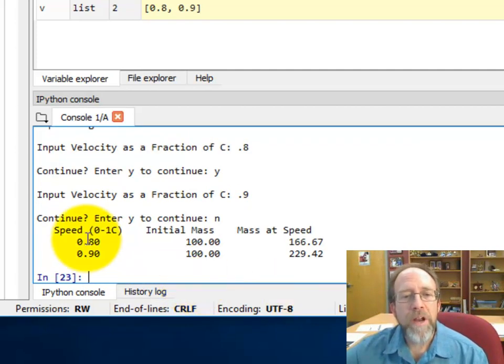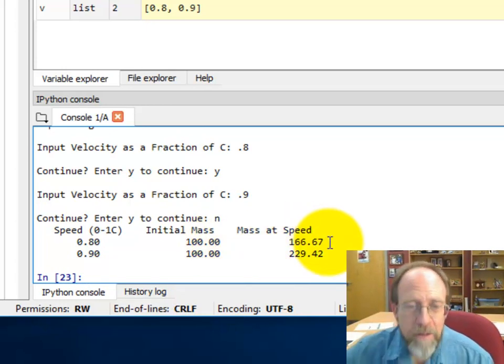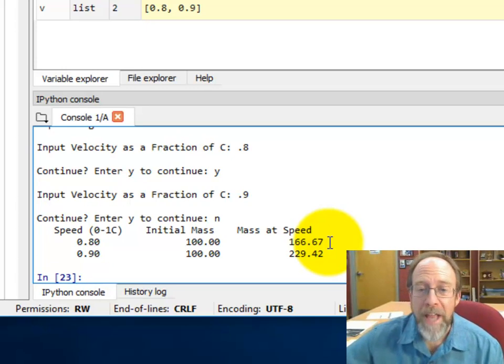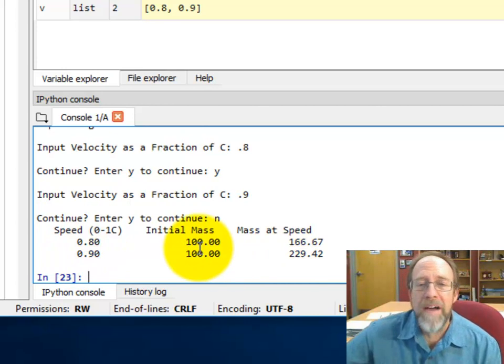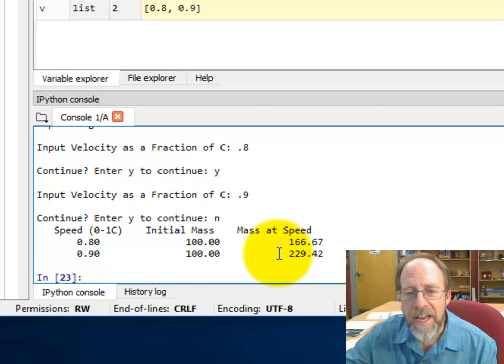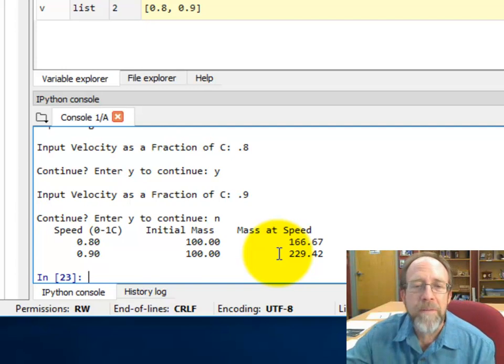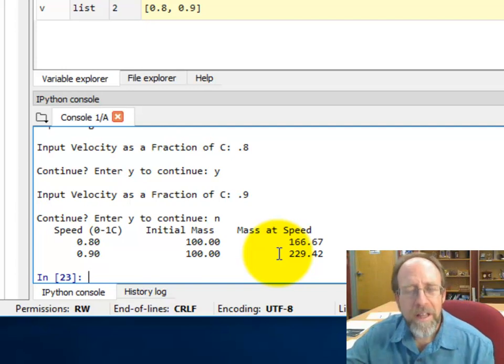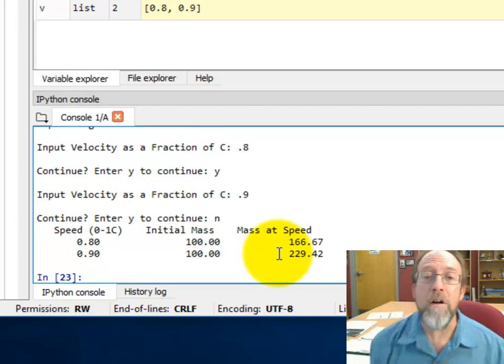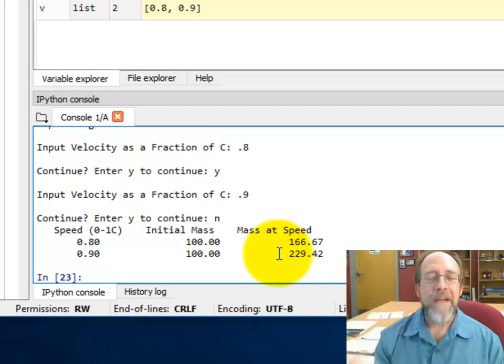And notice, here's my values. 0.8, initial mass 100. And 166.67, that's what you would actually, that would be your mass if you were going 0.8 the speed of light. And if you went 0.9 the speed of light, your mass if you were 100 whatever it was pounds, you would now be 229.42 pounds. For you people that are, I'm just going to be on YouTube, so you people that are physicists, if you're traveling 0.9 the speed of light and you weighed, let's say, 100 pounds to start with, or let's say 100 kilograms, which might be a more practical weight, are you actually going to weigh 229 kilograms, or are you going to be like, oh my god, I am so heavy?